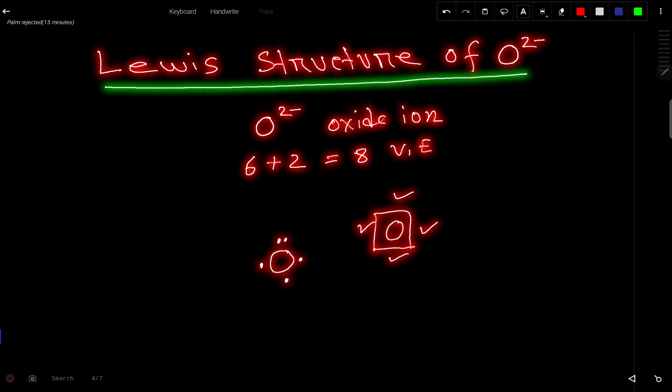So here we have 4, 5, 6, 7, 8. Now we have used all the 8 valence electrons as dots.